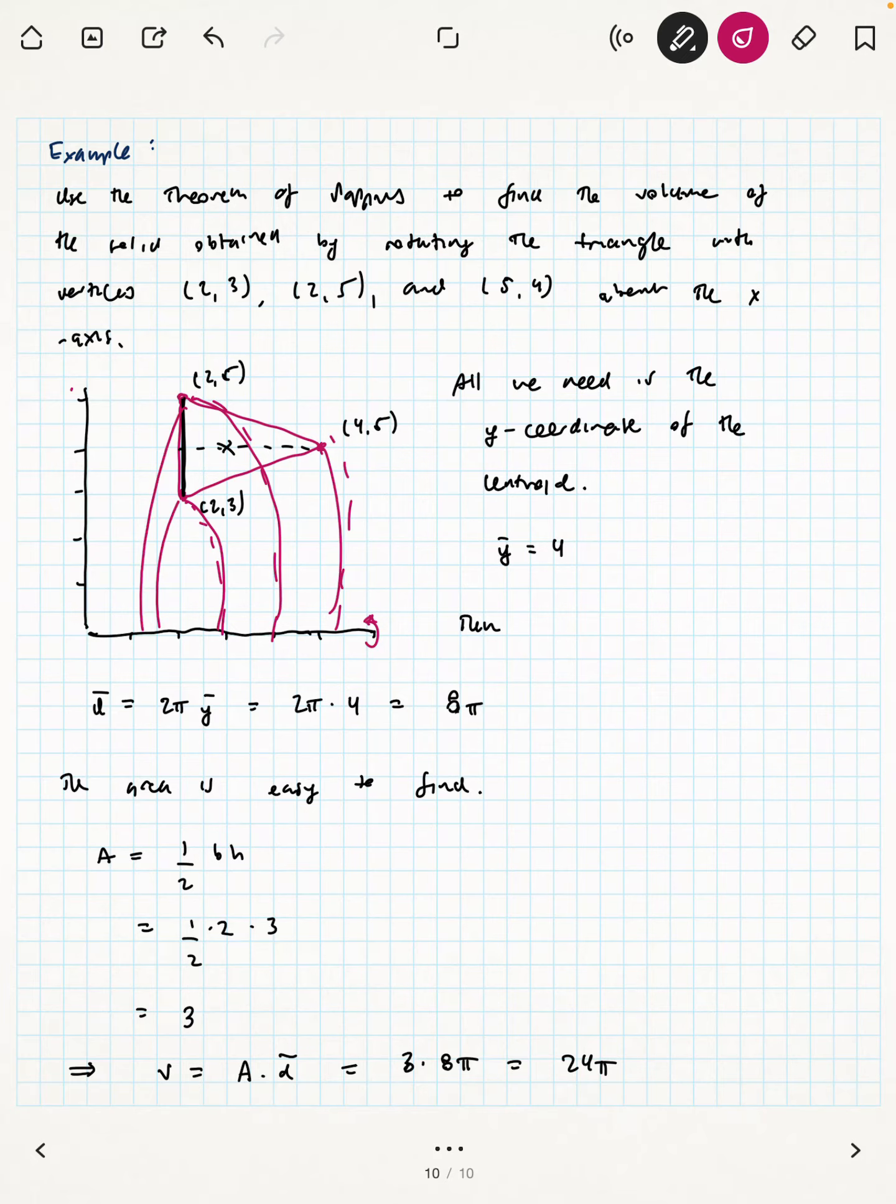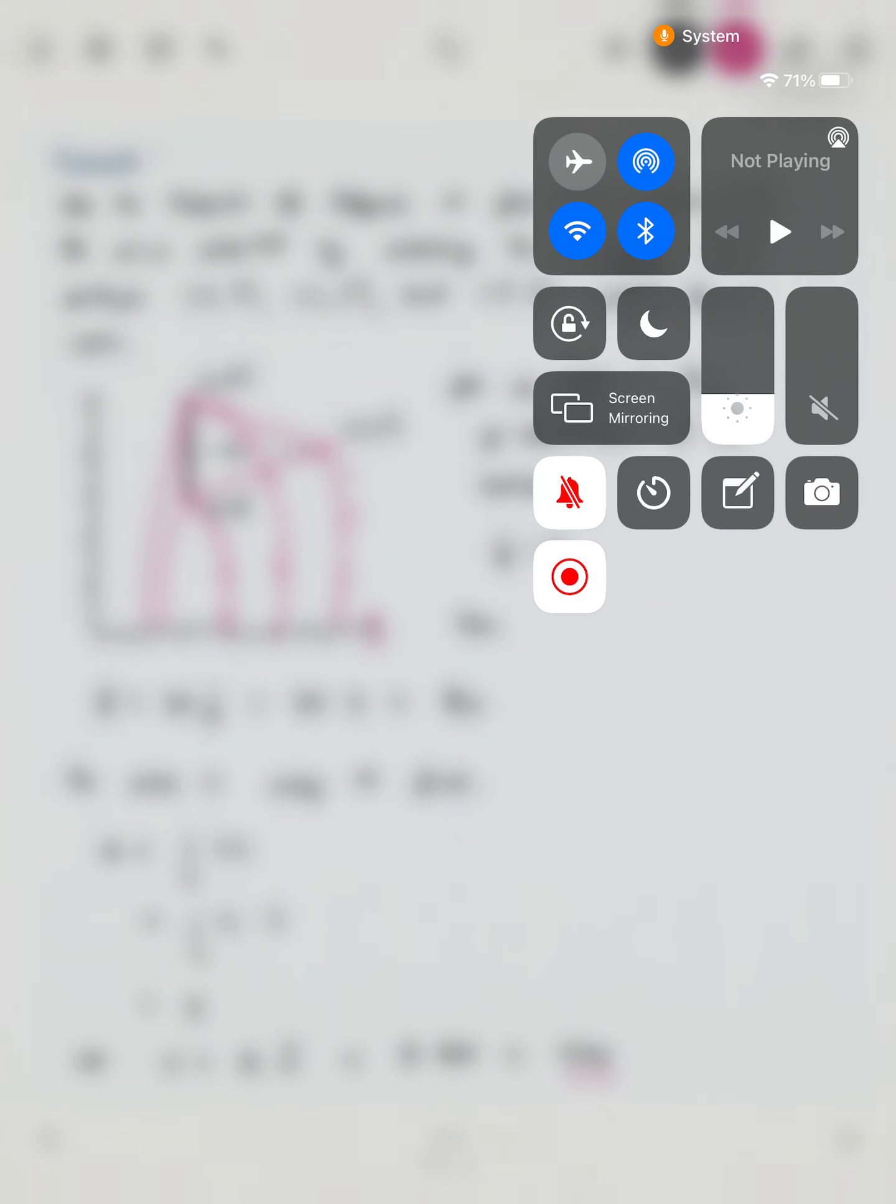Of this solid of revolution, which we would have otherwise had to find using an area between two curves calculation and then a whole bunch of other mess. But there it is. Isn't that nice?